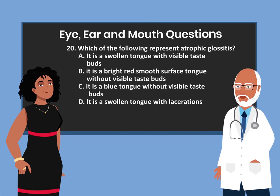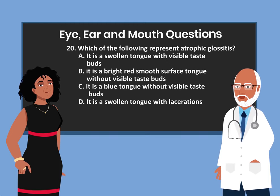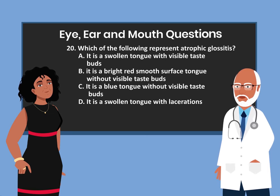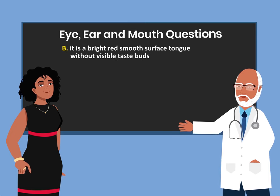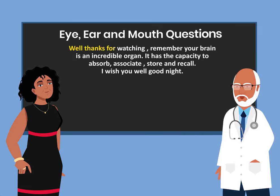Question 20. Which of the following represents atrophic glossitis? A. It is a swollen tongue with visible taste buds. B. It is a bright red smooth surface tongue without visible taste buds. C. It is a blue tongue without visible taste buds. D. It is a swollen tongue with laceration. The answer is B. It is a bright red smooth surface tongue without visible taste buds.